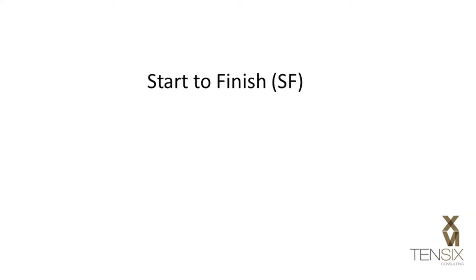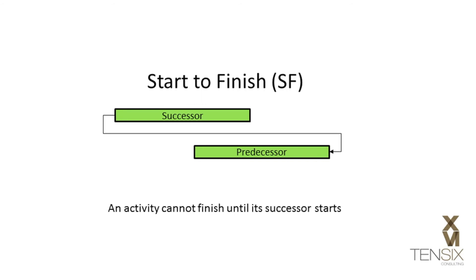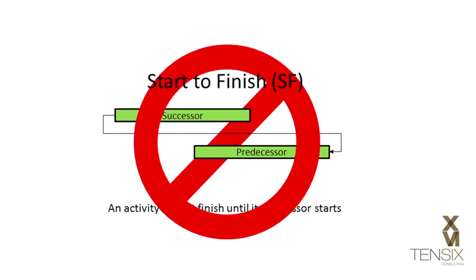Start to Finish is a somewhat confusing relationship type and is the least used of all the activity relationships. It basically states that an activity cannot finish until its successor starts. Most industry best practice guidelines actively discourage its use, as there are very few examples of a truly practical purpose for this relationship, and therefore we recommend you avoid using it.